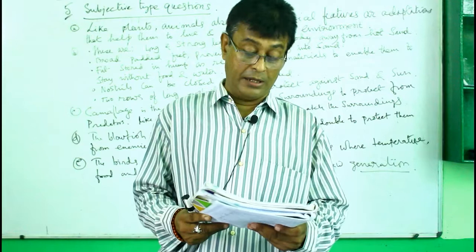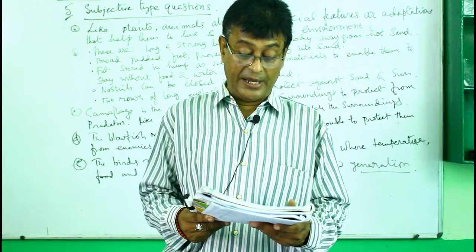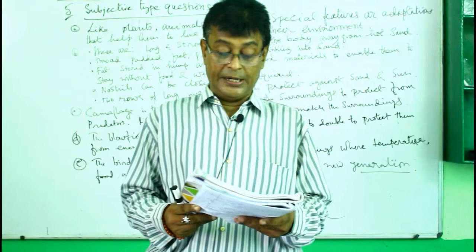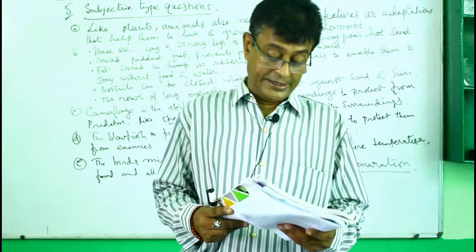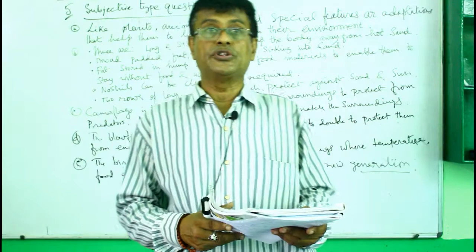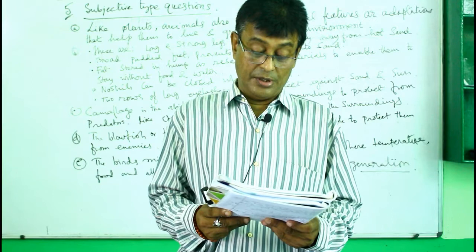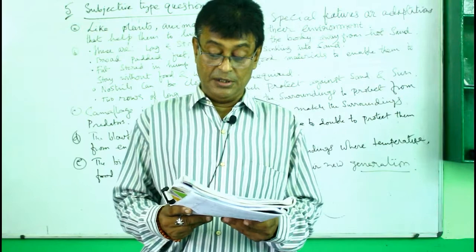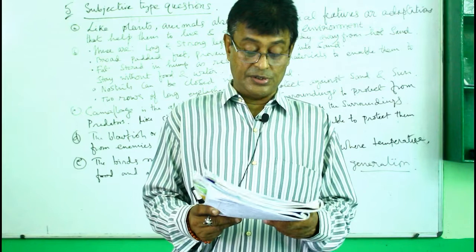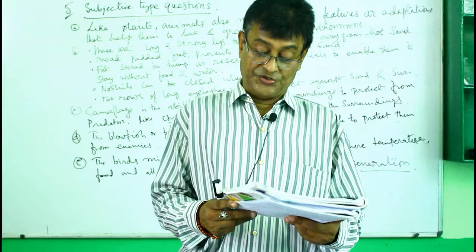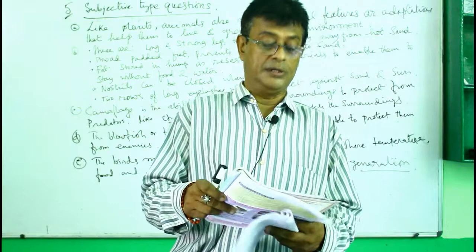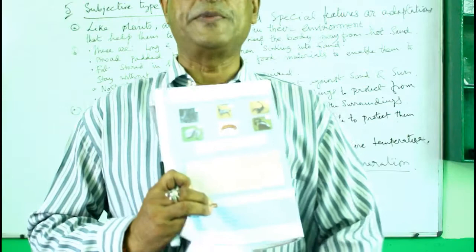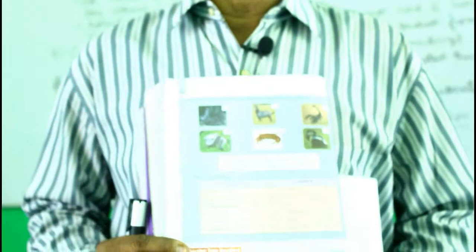To summarize, we have covered adaptations in land animals, arboreal animals, water animals, amphibians, aerial animals, and adaptations for protection. Now let us go through the question and answers for this chapter. For the objective type — 'Guess the animal': a) snake, b) camel, c) polar bear, d) penguin, e) whale, f) flamingo.